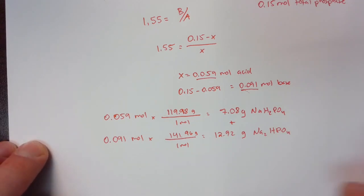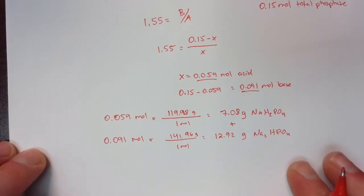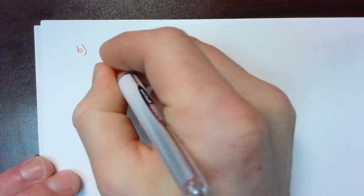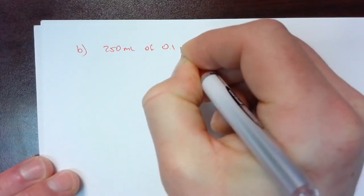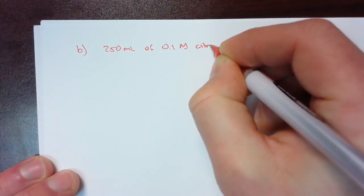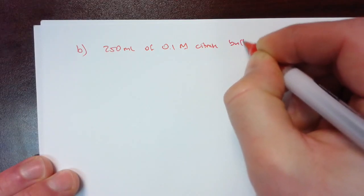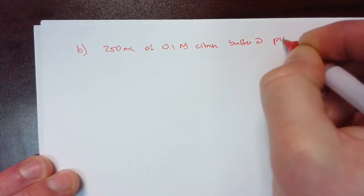All right. So now for the second one, part B. Part B, again, is 250 milliliters of 0.1 molar citrate buffer at a pH of 6.